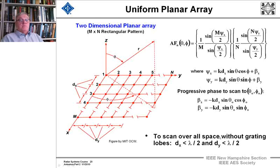And to scan over all space without grating lobes, the spacing in the x direction has to be less than lambda over 2, and in the y direction, lambda over 2. You can see they're laid out in a rectangular pattern, it could be square. And you notice we're looking, if the array is located in the xy plane.